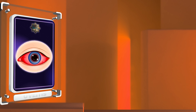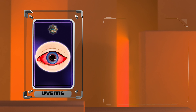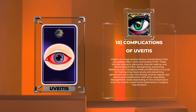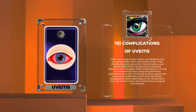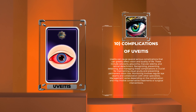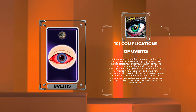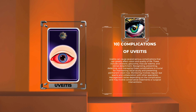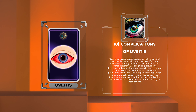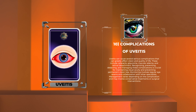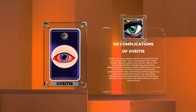Uveitis can cause several serious complications that can greatly affect vision and quality of life. These include cataracts, glaucoma, macular edema, and retinal detachment. Recognizing, preventing, detecting, and managing these complications is crucial for maintaining visual acuity and preventing permanent vision loss.